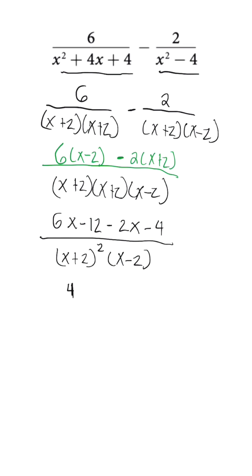Now when we combine our numerator, we're going to have 4x minus 16 all over x plus 2 squared times x minus 2. This is going to be our final answer.